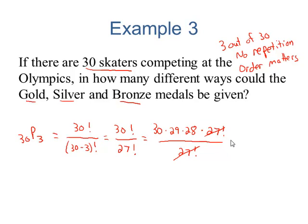Now, all I have to do is multiply thirty by twenty-nine by twenty-eight, and that works out to be twenty-four thousand three hundred sixty. Now again, in class, I'm going to show you how to enter thirty P three into your calculator. Let's try one more.